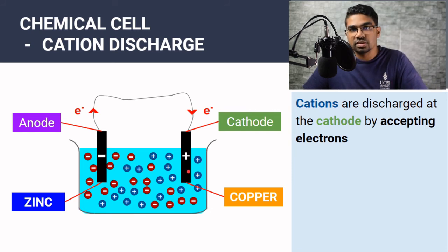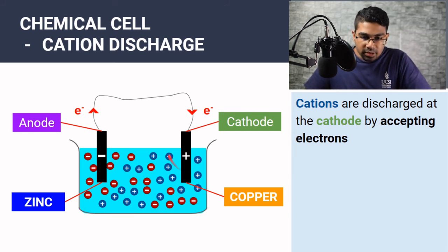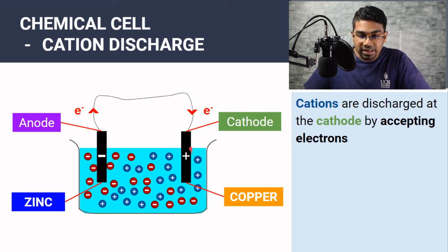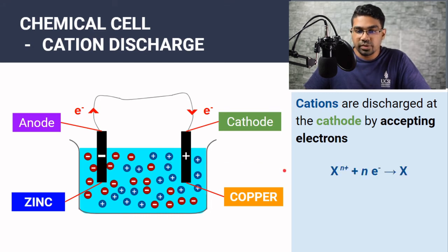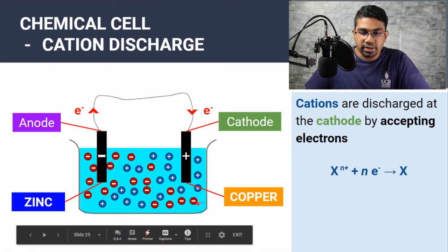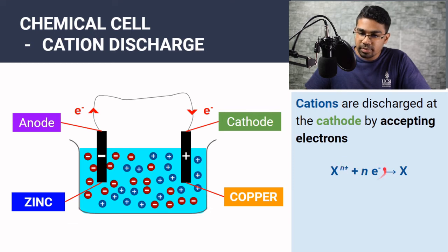At the anode there is no discharge of anions. When electrons reach the cathode, cations are discharged — same as in the electrolytic cell. The positive ions in the electrolyte accept electrons from the cathode and are discharged. The general equation is: X^(n+) + n e⁻ → X, where n depends on the charge of the cation.